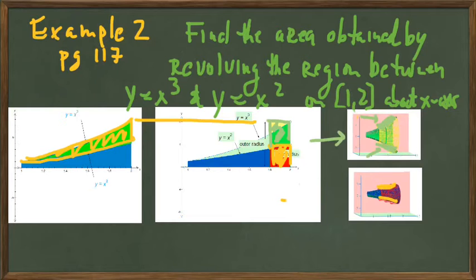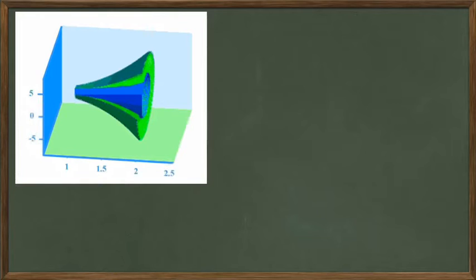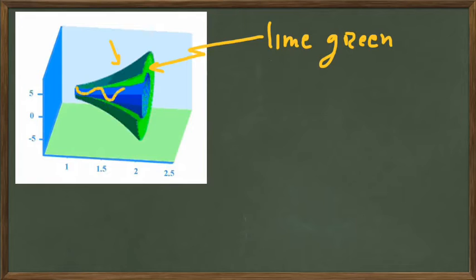When we do this revolution of this region, here's what the figure looks like. The region whose volume we're trying to find is this lime green shaded region. It is enclosed in this dark green skin, and it's not the whole cone-shaped region because we're removing the volume of this interior blue region. So we're subtracting that off.